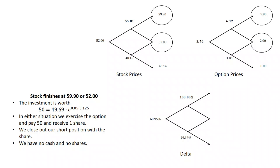So basically, the stock started at 52. We didn't start by assuming one thing happened or another. But if the stock did go to 55.81, we changed our position, rebalanced our delta hedge, and waited again. And then in this case, it didn't matter whether the stock ended at 59.9 or 52. In both cases, we ended up with exactly the right amount of money. So we could exercise the option, close out our short position. We have no cash and no shares.